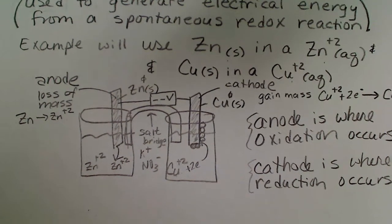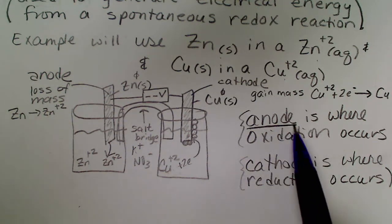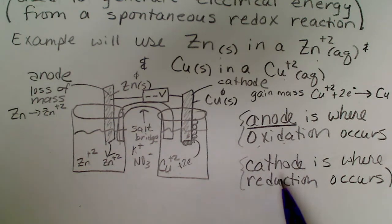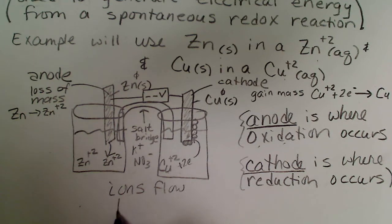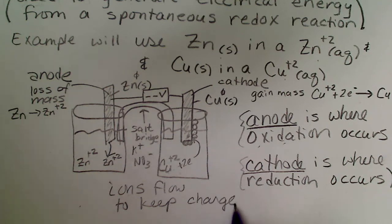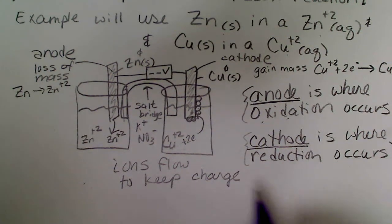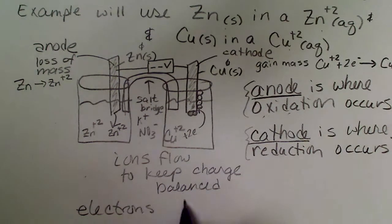To review vocabulary: the anode is the electrode where the oxidation reaction occurs, and the cathode is the electrode where reduction occurs. The ions in the salt bridge flow to keep the charge balanced — anions flow in one direction and cations in the other, depending on the direction electrons flow. Electrons flow from the anode to the cathode.